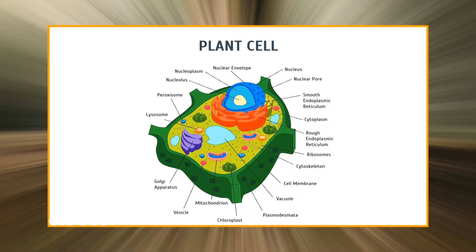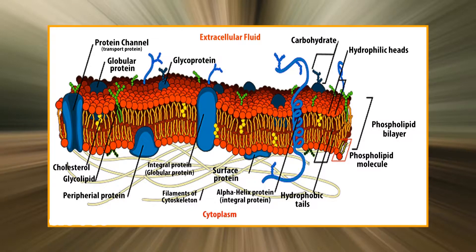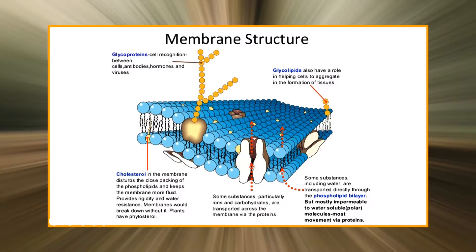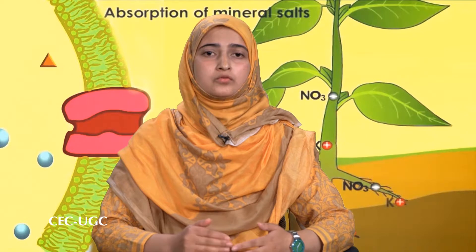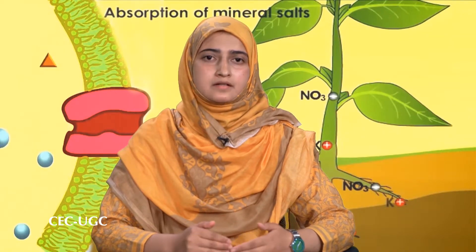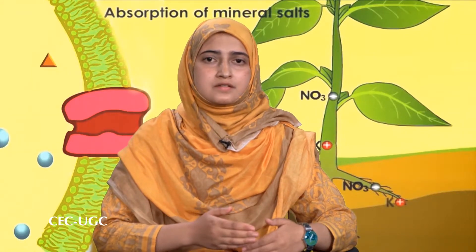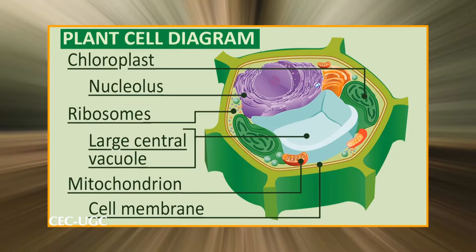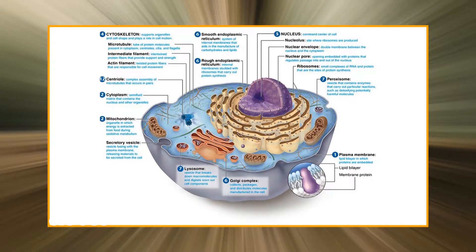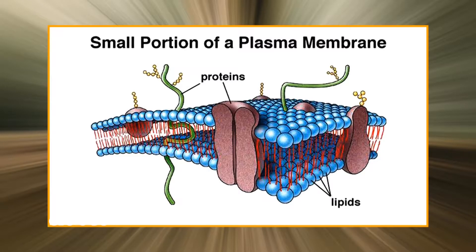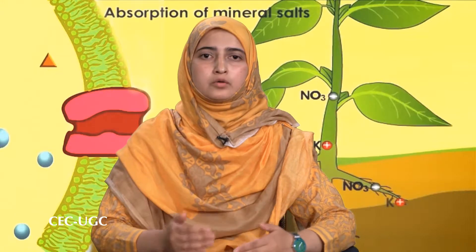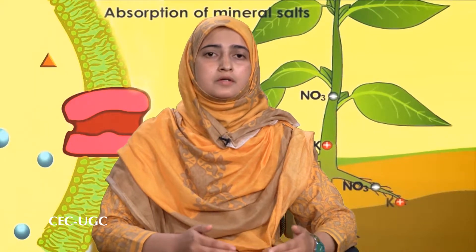Plant cells are separated from their environment by a plasma membrane that is only two lipid molecules thick. This thin layer separates a relatively constant internal environment from highly variable external surroundings. In addition to forming a hydrophobic barrier to diffusion, the membrane must facilitate and continuously regulate the inward and outward traffic of selected molecules and ions as the cell takes up nutrients, exports wastes, and regulates its turgor pressure.